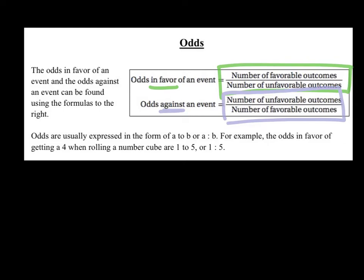So odds can be written as a ratio usually. We can write this in the form of a to b or a colon b.